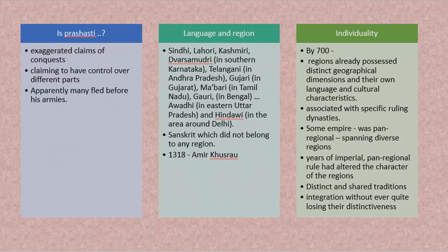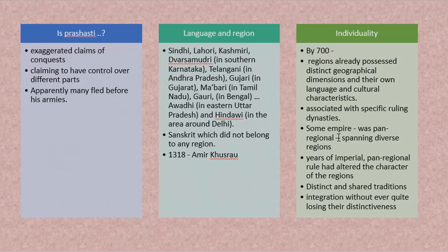Different languages existed in those periods; some are the same today, some are different. The script, syllables, words, pronunciation, and regions of use have all changed. In the latter part of the medieval period, individuality was coming into existence. Regions already had different geographical, cultural characteristics and languages, though many languages did not have a written version and were only verbally spoken.